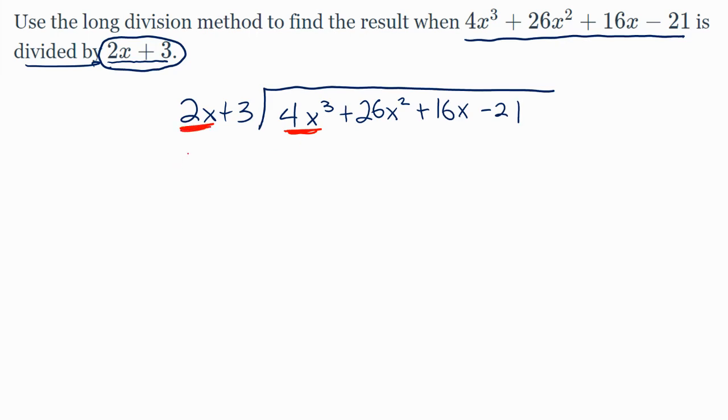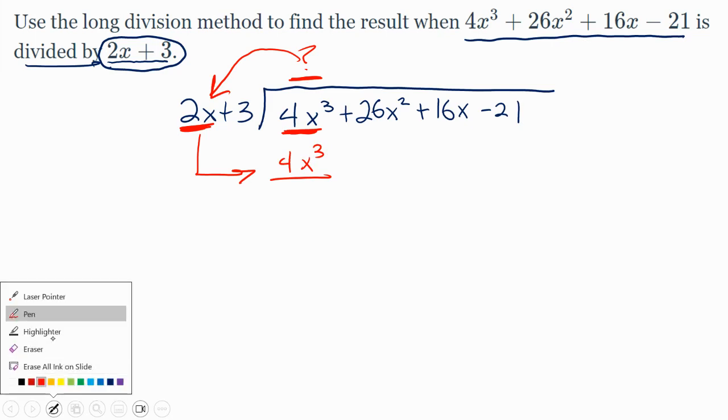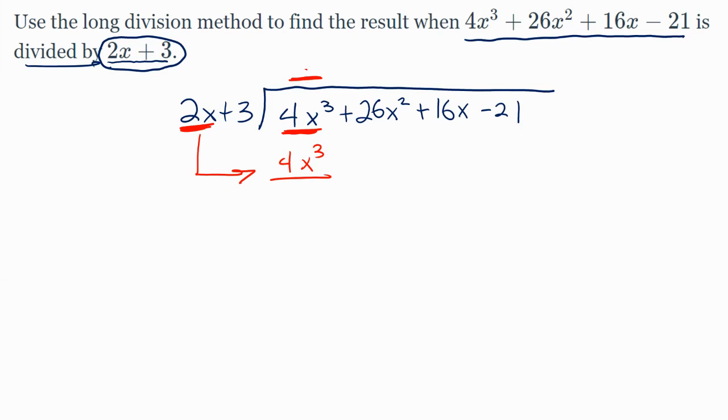What you do is you look at the first term of what you're dividing by and look at the first term, one term at a time, with what you're dividing into. And you ask yourself up top, what would you multiply by the 2x to get exactly 4x³? The answer to that question is a very simple 2, but then you need the x to go up a couple powers.